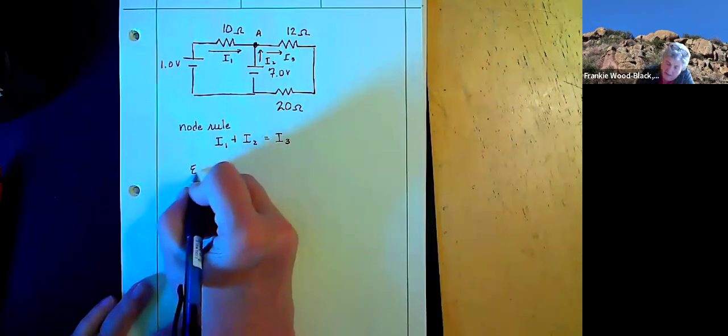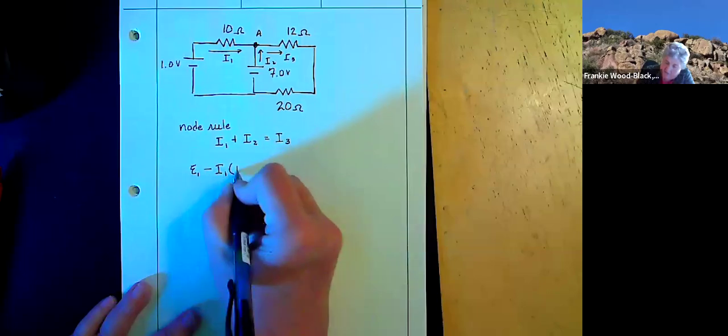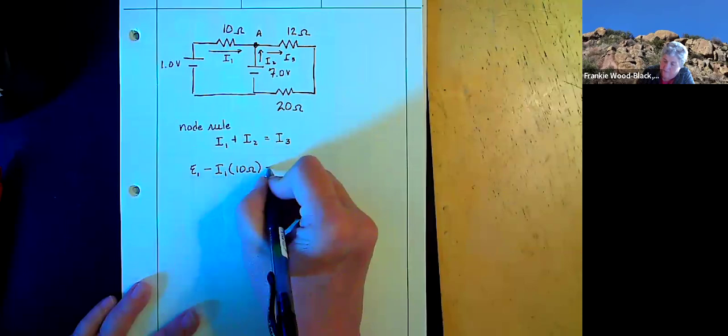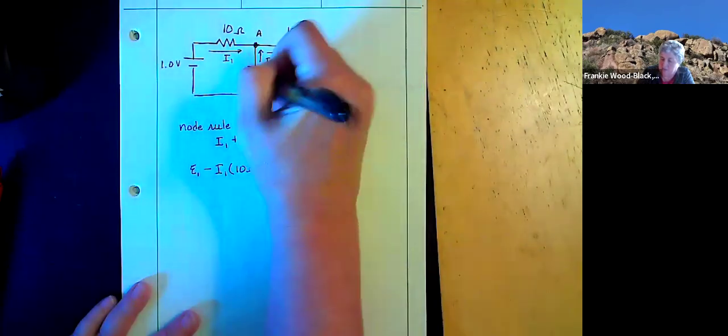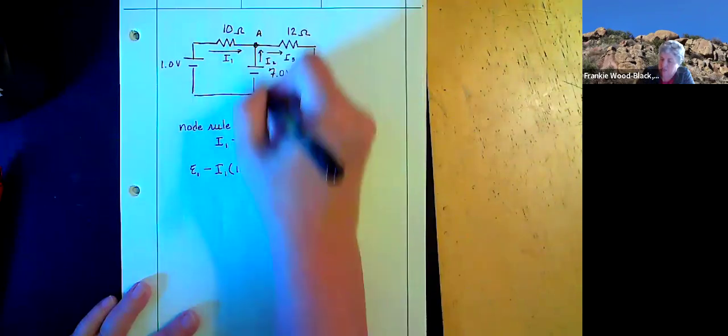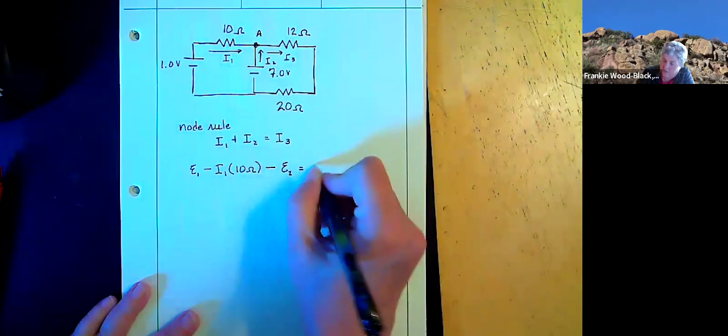So I've got my EMF1 minus my I1 times my 10 ohms. And then I'm going backwards across this one. So that's just the EMF there. And that's going to equal zero.